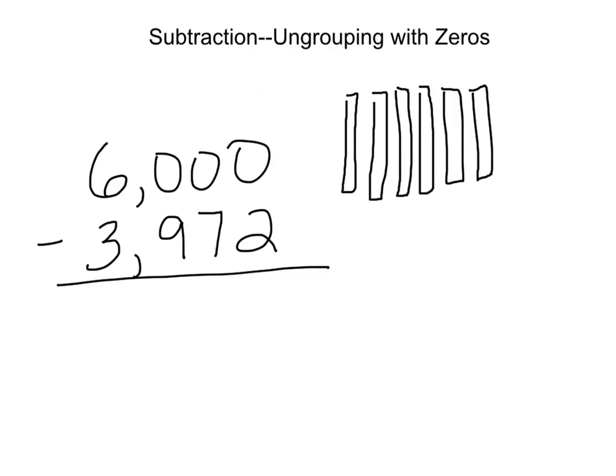If that's the case, then I need to ungroup something from this top number and regroup it to get to that ones place so that I have something to take 2 away from. That shouldn't be a problem because 6,000 is more than 3,972. So how am I going to do that?